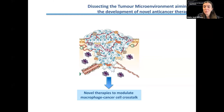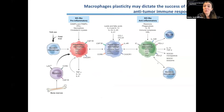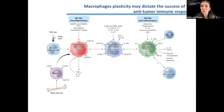We are particularly focused on macrophages. We want to understand how crosstalks are established to develop novel therapies modulating the macrophage-cancer cell crosstalk. Macrophages are a very plastic immune cell population, and this plasticity dictates success in their interaction with cancer cells. We do not have macrophages in circulation — we have monocytes — and when they reach a tissue, according to the factors they find, they differentiate into two major profiles: a pro-inflammatory M1-like, and an anti-inflammatory M2-like.